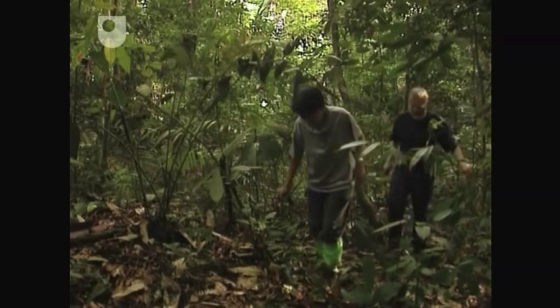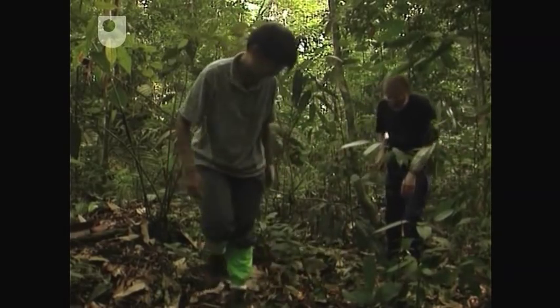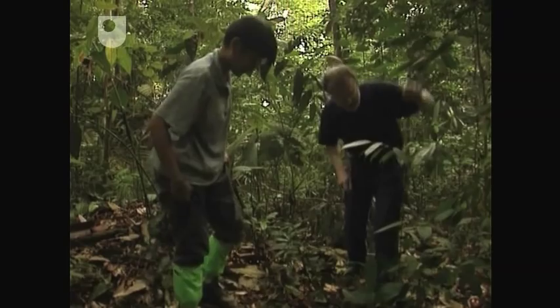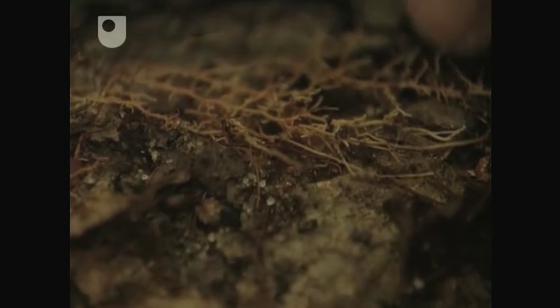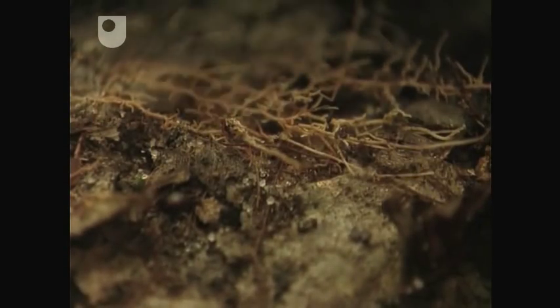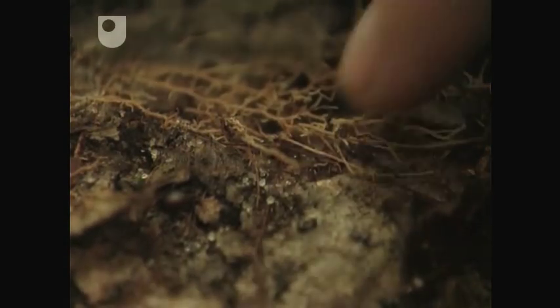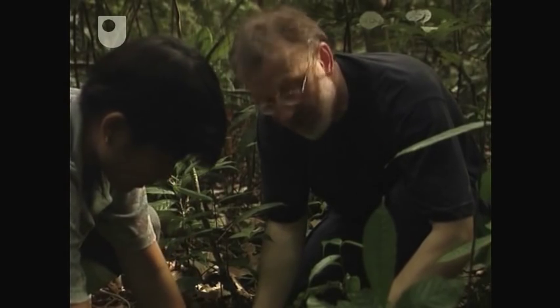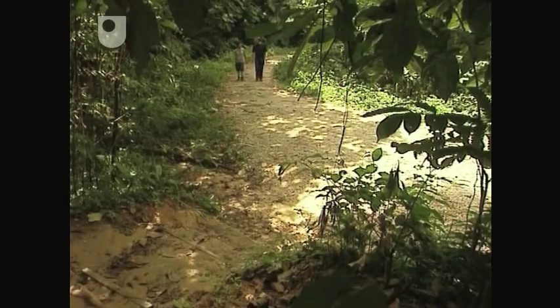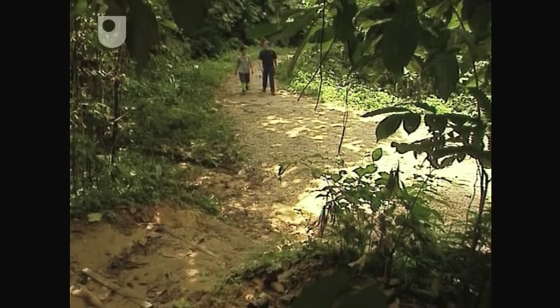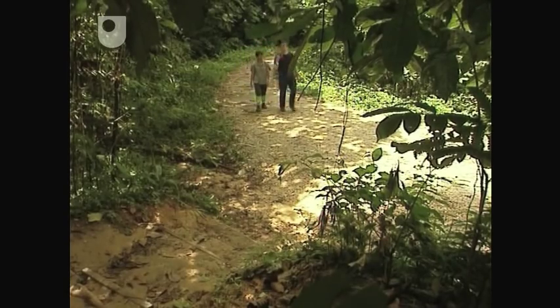Behind every great Dipterocarp lies a team of tiny fungi. Underneath this big Dipterocarp, look at those. The mycorrhizas are very active in competing for water and nutrients and providing benefit to the tree. In fact, the trees on these poor tropical soils just wouldn't survive without them.